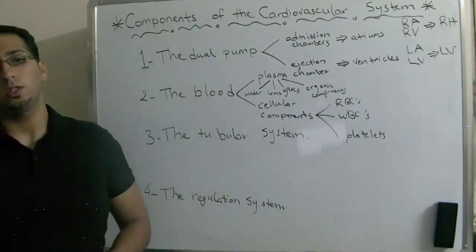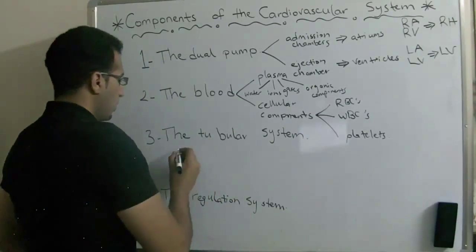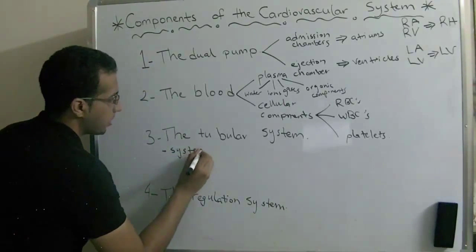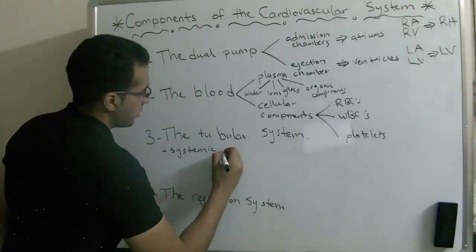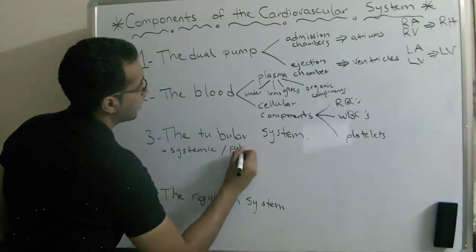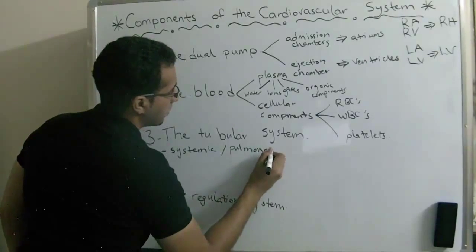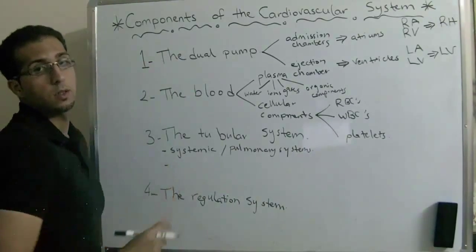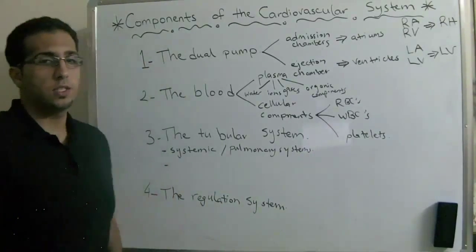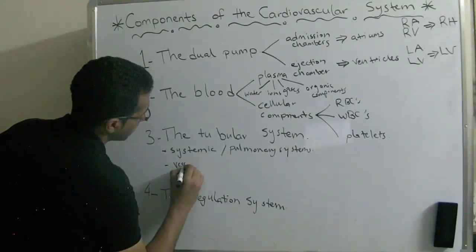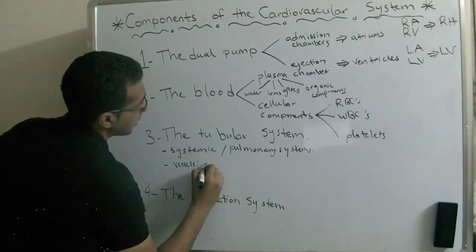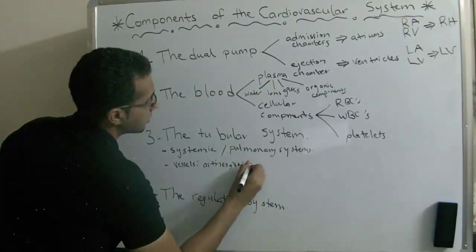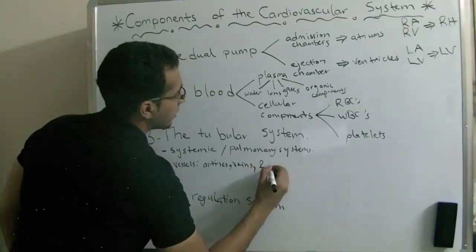For the tubular system, it has the systemic and the pulmonary systems. It also has vessels: the arteries, veins, and capillaries.